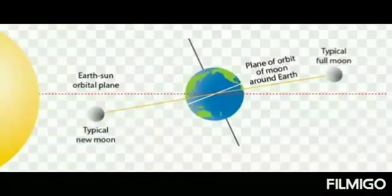The moon also revolves around the earth in 27.3 days, so it must also have a plane containing its own orbit around the earth. Now these two planes are not the same. The plane of the orbit of the moon is tilted by an angle of 5.14 degrees from the ecliptic.